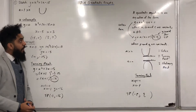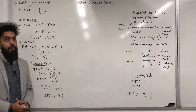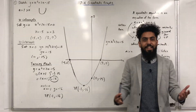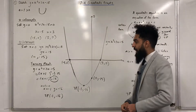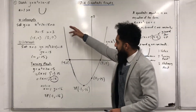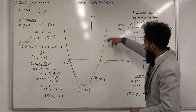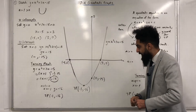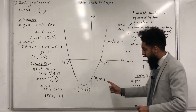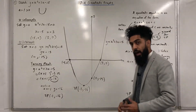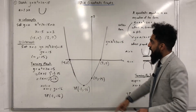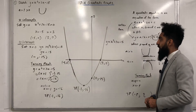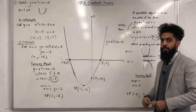Now I have enough information to sketch my quadratic graph. Here is my quadratic graph: I've got my U-shape, my x-intercepts labelled, my y-intercept labelled, and my turning point labelled. I've also labelled the equation of the graph, which is y = x² + 2x − 15.